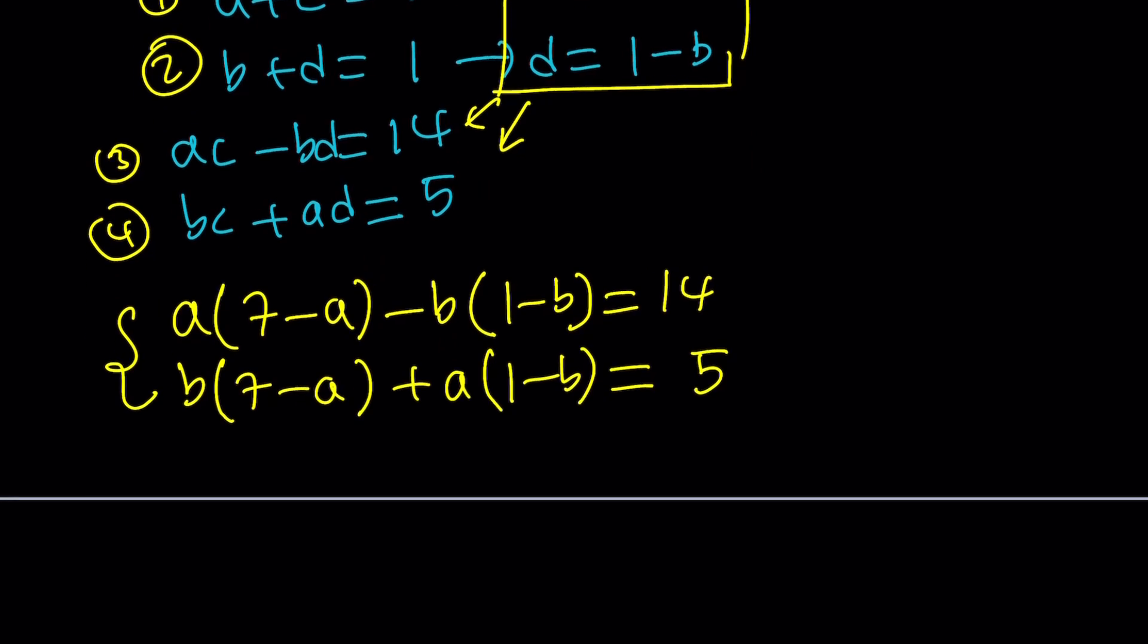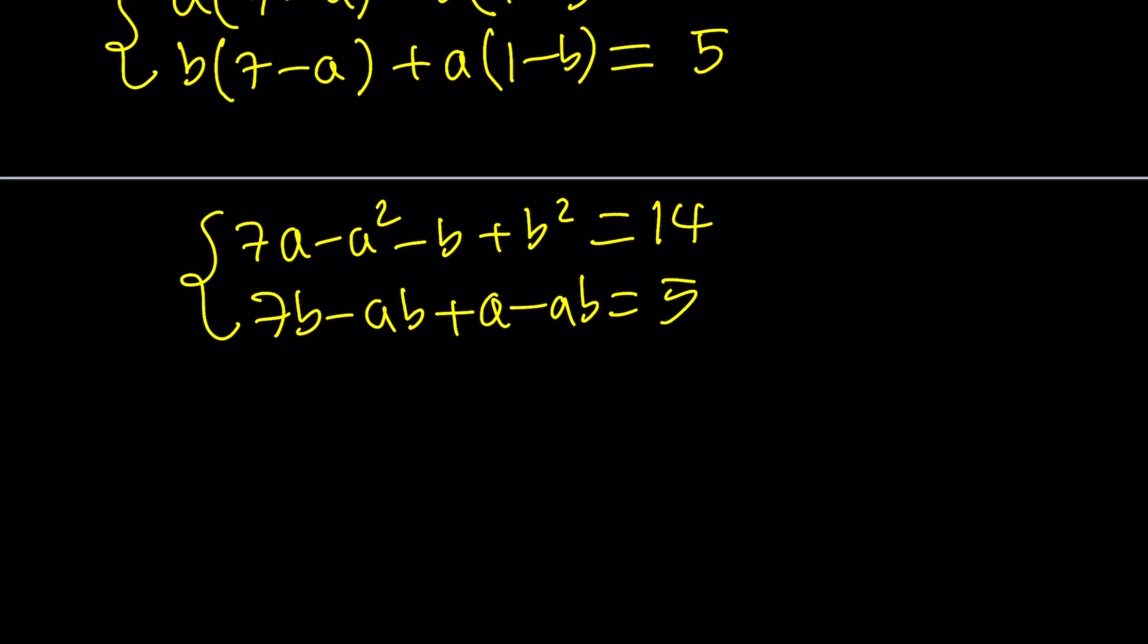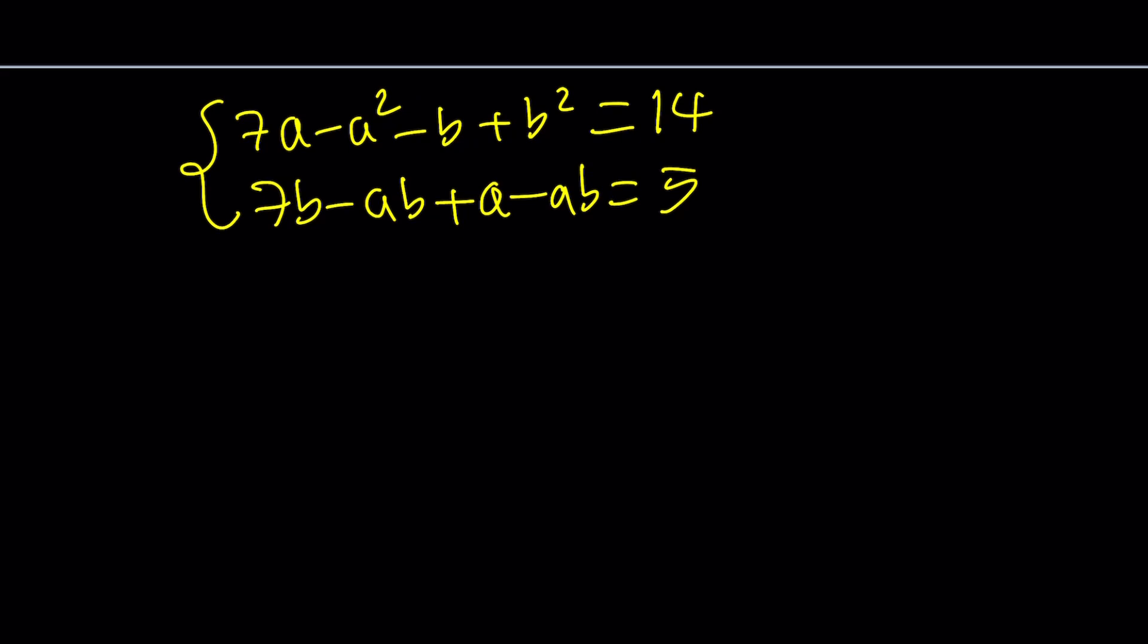So this just gives us another system of equations. The good thing about this system is that there are only two variables. So let's go ahead and distribute, rearrange the terms and we're going to start solving. This is a little better and what we can do now is go ahead and combine the negative AB and the negative AB. That gives us negative 2AB.